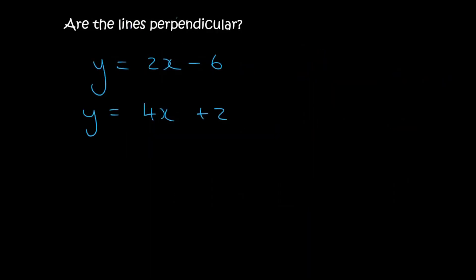Now let's practice. Are these lines perpendicular? The gradient of the first line is 2 and the gradient of the second line is 4. If you multiply them, that's 8 — so these two lines are not perpendicular; you need minus 1 for that. Are they parallel? No, because for parallel lines the two gradients would have to be the same.